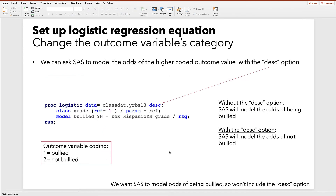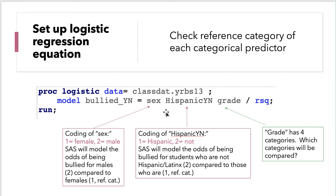However, if we wanted SAS to model the odds of the higher coded outcome — not being bullied — we could add the DESCENDING option at the end of the first line. That tells SAS to model the odds of the higher coded outcome value. We want to model the odds of being bullied, so we will not include this option. After checking the coding of the outcome, we look at the coding of the predictor variables to make sure we're comfortable with the reference category as the lowest coded value, which SAS uses by default. For sex, the lowest coded value is female, so SAS will model the odds of being bullied for males, coded 2, compared to females, coded 1, the reference category.